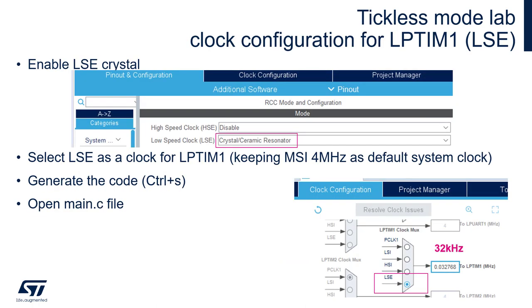We need to enable the LSE clock source for the low-power timer. Within pinout and configuration, please select the System category, then select RCC (Reset Clock Configuration). Within low-speed clock LSE, please select Crystal Ceramic Resonator. Then please go to the clock configuration tab and select LSE as a clock source for low-power timer 1, keeping MSI-based 4MHz as the default system clock.